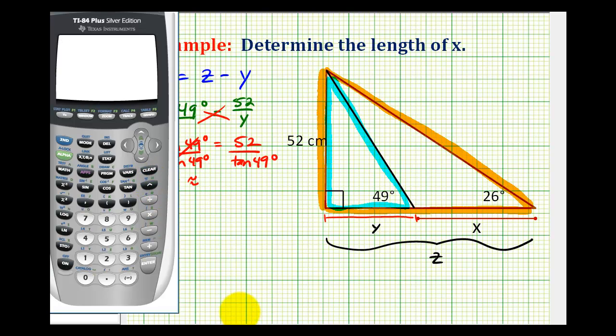And now we can determine the value of y. Let's go to the calculator. Let's make sure we're in degree mode. We are. And now we'll find this quotient. Fifty-two divided by tangent forty-nine degrees. So y is approximately forty-five point two centimeters.